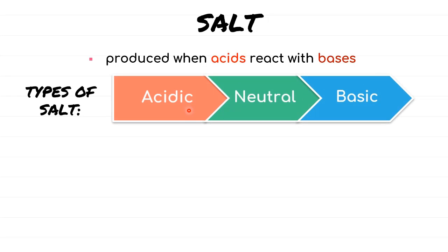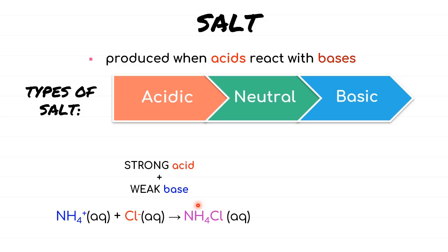The first one is acidic salts. Acidic salts are formed when a strong acid reacts with a weak base. For example, we have the weak base ammonia reacting with the strong acid HCl. We take only the conjugate pair to form the salt. The conjugate of base NH₃ will be NH₄⁺, while the conjugate of acid HCl is Cl⁻. Hence, the salt NH₄Cl is formed. Since the stronger acid is used, the salt is acidic with pH less than 7.